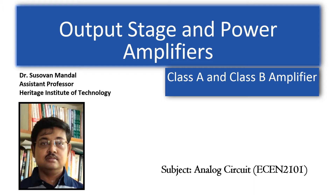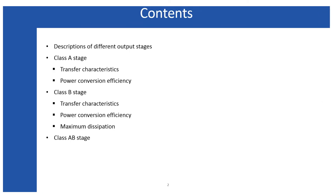In addition to Class A and Class B, the Class AB power amplifier is an obvious choice beyond Class B, and that will also be introduced in this lecture. I will first describe the different types of output stages and the parameters we use to define Class A, Class B, and Class AB. Then I will discuss the Class A stage — its transfer characteristics and power conversion efficiency — followed by the Class B stage.